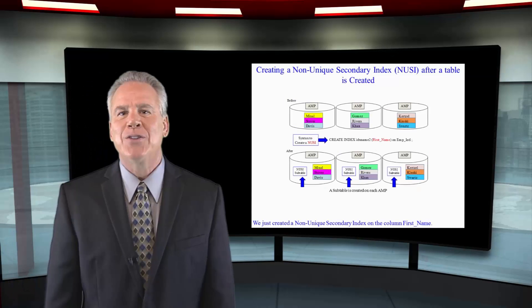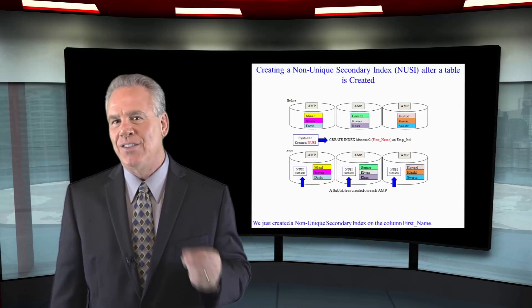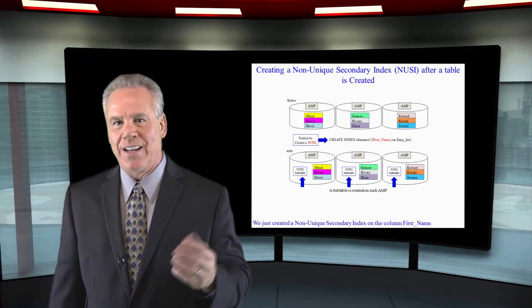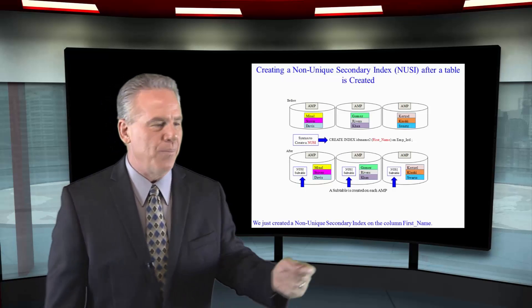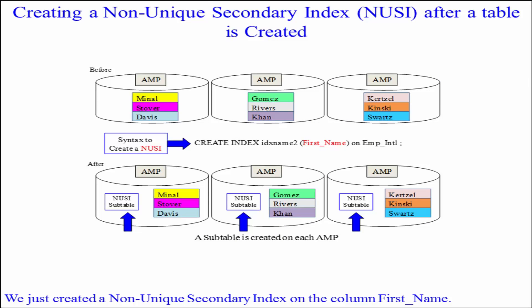Here's the syntax to create a non-unique secondary index on a table. I say CREATE INDEX, here's the index name, then open paren, first name, close paren, ON EMP International, and I've created a non-unique secondary index.